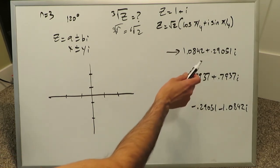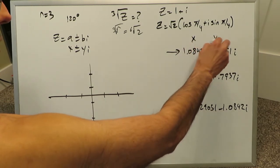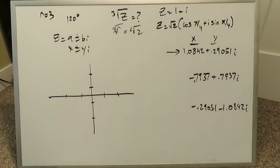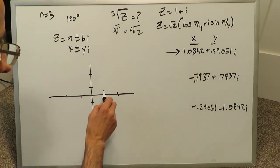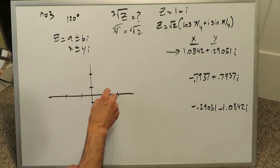1.0842 and 0.29051. You can look at each of these as an x and y coordinate pair, and you'll graph it that way. 1.0842 is close and slightly above the 1 value, but 0.29 is like a 0.3. You can go across and rough estimate the value to be right over here. This is my first root.